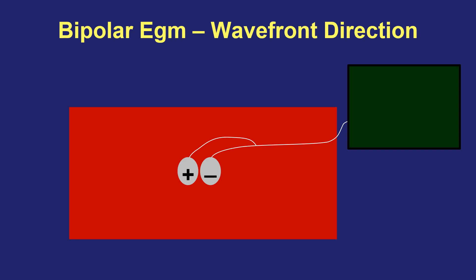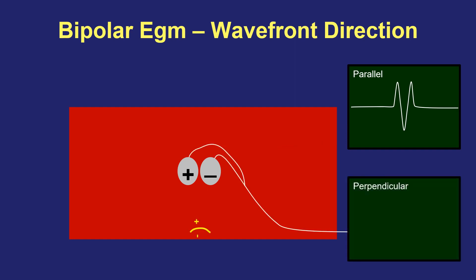Thinking about this in different dimensions: when you have a bipole, a wavefront passing parallel to the electrodes gives you a recording exactly as described. But if the wavefront moves perpendicularly to the orientation of the bipole, you'll get a very flat or almost absent recording — because the two opposite polarity electrodes record the signal at exactly the same time, resulting in almost complete nullification and overlap of the opposite polarity of the two unipolar recordings.